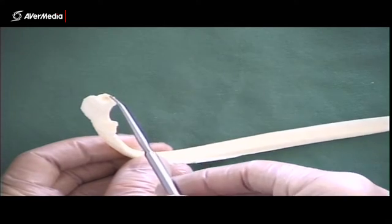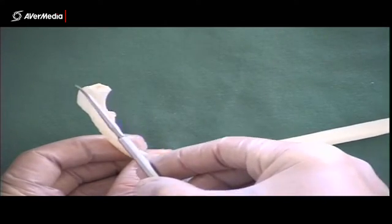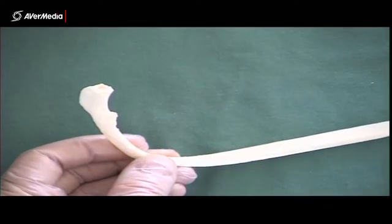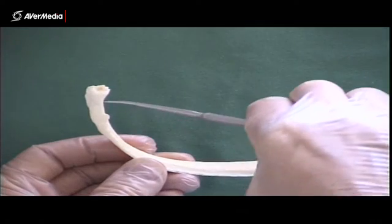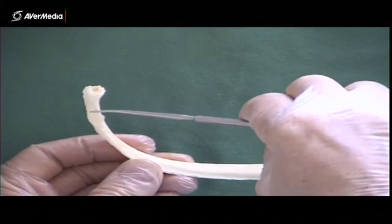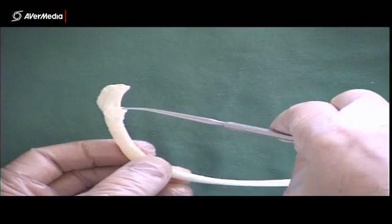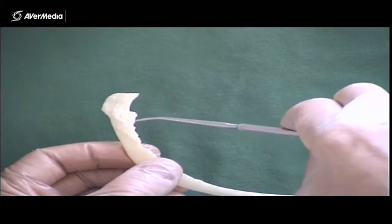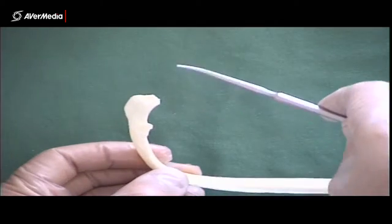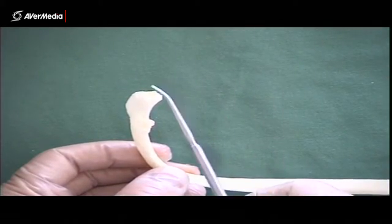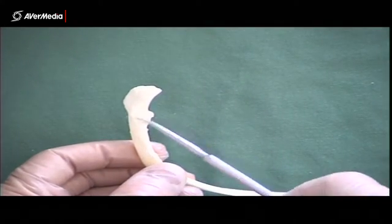At the vertebral end, we have a head. This large area at the end of the rib is the head. Then this narrow section just next to the head is the neck. And at the end of the neck, there's a bump here, which is a tubercle. What you need to know on the ribs is really just head, neck, and tubercle.